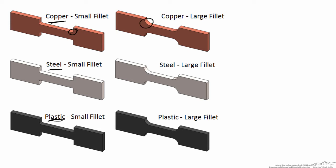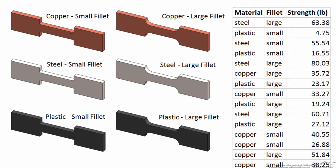In all, we've got six different types of dog bones. As an engineer, you ask somebody to make these dog bones and run the experiments. The technician returns a day later and presents you with a table showing the material — steel, plastic, or copper — and the fillet radius, small or large, along with the measured strength required to break each sample. The first thing I would ask is whether or not the experiments were run in the order shown.